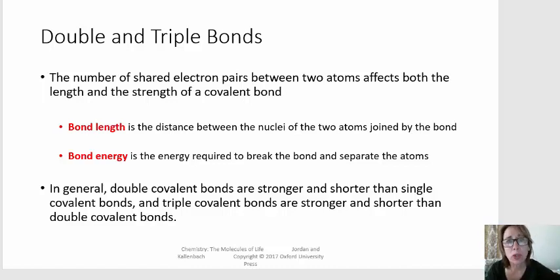And double, triple, and single bonds are different in terms of their bond length and their bond energy. Bond length is determined by the distance between the two nuclei involved in the bonding, and bond energy is the minimum energy required to break that bond. So single bonds are the longest, double bonds are shorter, and triple bonds are the shortest.